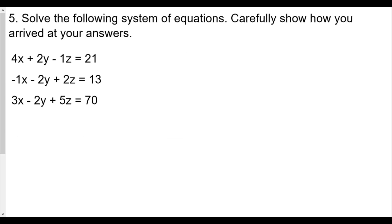Looking at the equations: x has coefficients 4, negative 1, and 3 — not matching. z has coefficients negative 1, 2, and 5 — not matching. But y has coefficients positive 2, negative 2, and negative 2. The first two equations have opposite coefficients for y, so y is the variable we'll eliminate first. We'll pair up equations that have opposite y-coefficients.